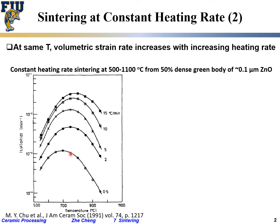There is also a peak value of strain rate: the highest rate is not reached at the end of constant heating rate sintering, but somewhere in between — at an intermediate temperature corresponding to intermediate densification, from roughly 55% relative density up to around 85% relative density.